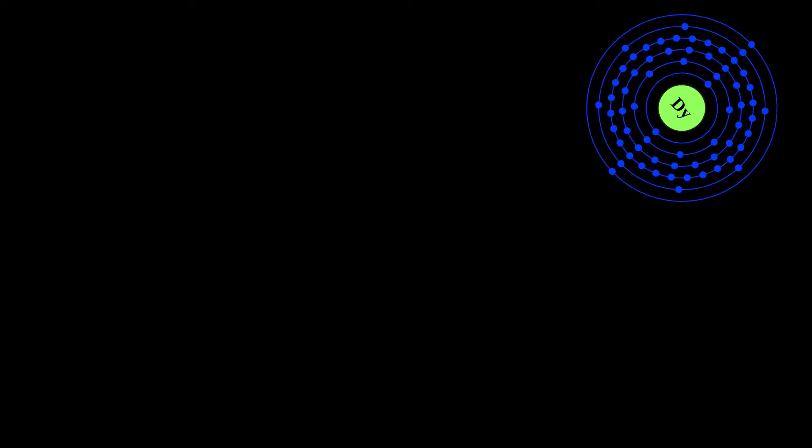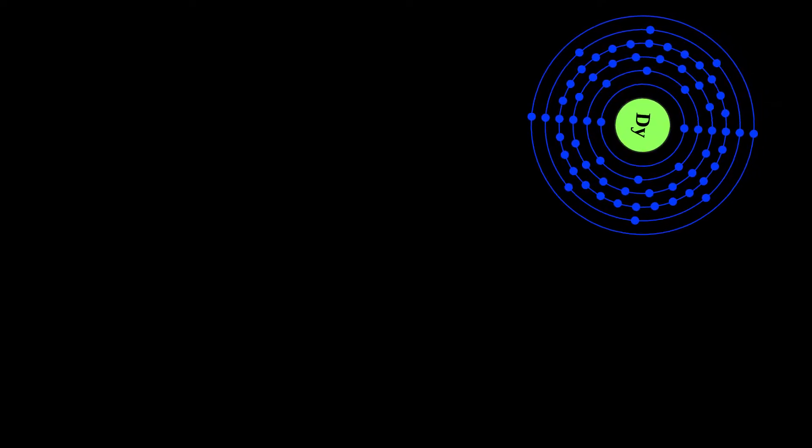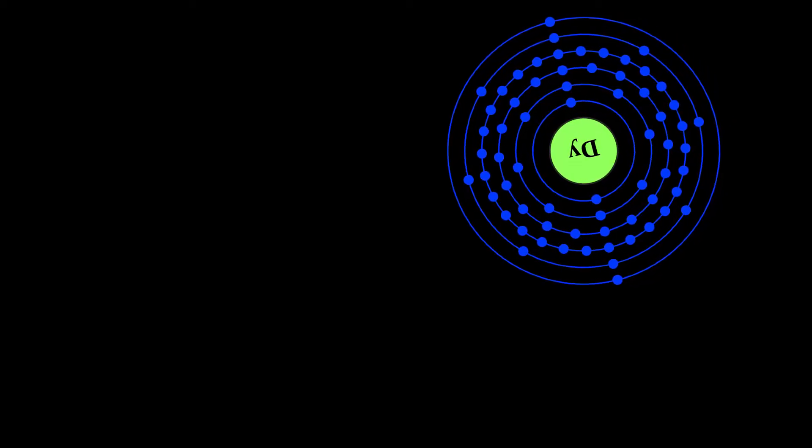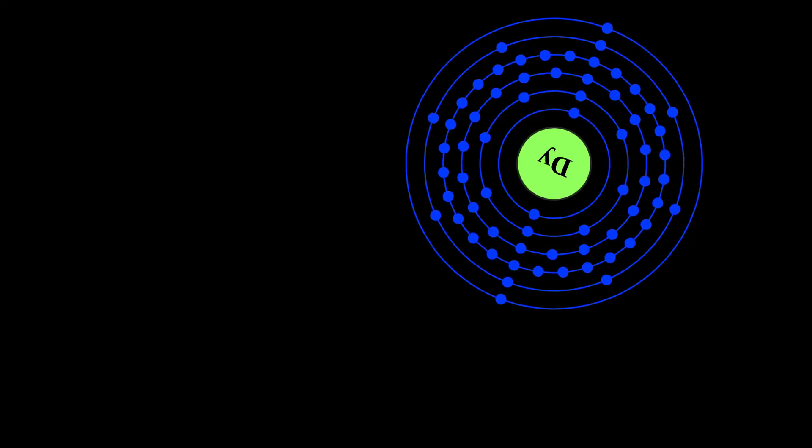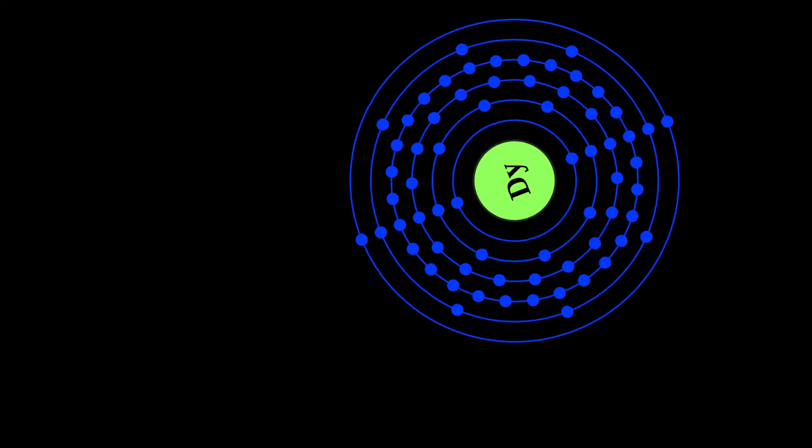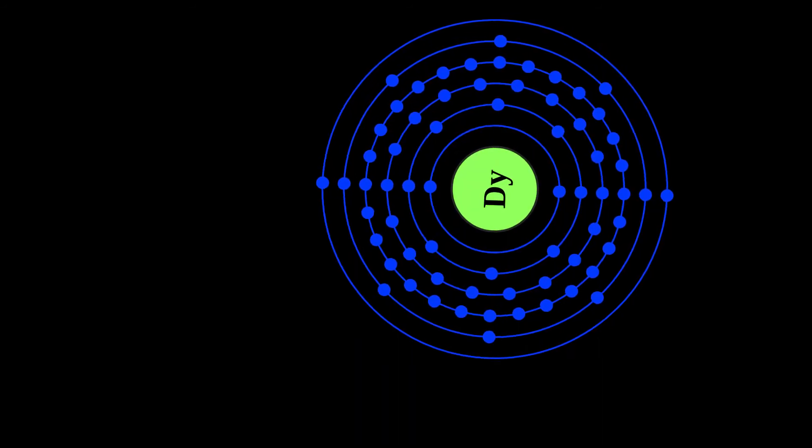Dysprosium has relatively few applications where it cannot be replaced by other chemical elements. It is used for its high thermal neutron absorption cross-section in making control rods in nuclear reactors, for its high magnetic susceptibility in data storage applications, and as a component of terfenol-D, a magnetostrictive material.